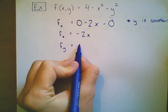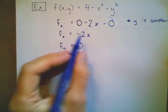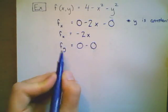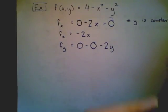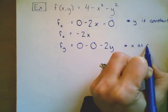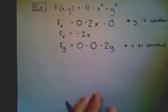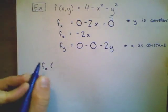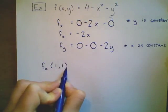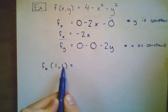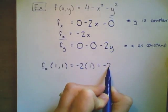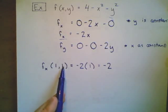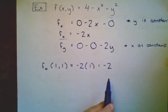Similarly, for the partial derivative with respect to y: the derivative of 4 is zero, the derivative of x squared is zero because x is treated as a constant, and the derivative of negative y squared is negative 2y. So the partial derivative with respect to y is negative 2y, treating x as constant. If I wanted to evaluate the partial derivative with respect to x at the point (1, 1), I plug x equals 1 into negative 2x: there's no y in this function, and I get negative 2 times 1, which equals negative 2. So the slope when y is fixed at 1 is negative 2.